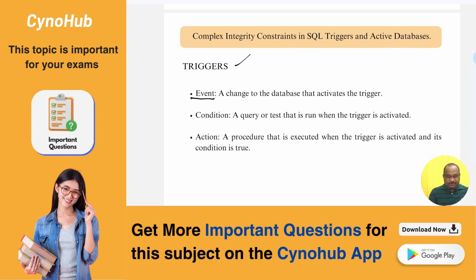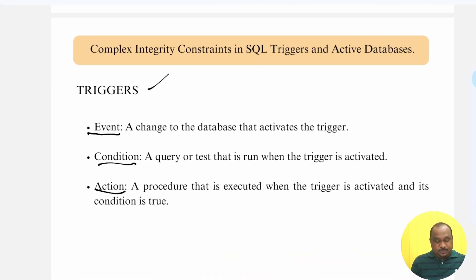One is event, condition and what is the action is required. An event is a change to the database that activates the trigger. What is the change is required? What is the event?